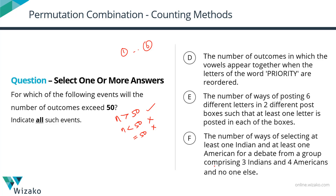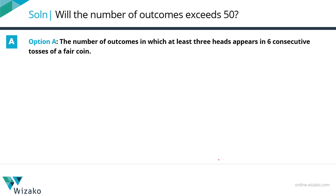Let's start with option A: the number of outcomes in which at least 3 heads appear when a coin is tossed 6 consecutive times. You toss a coin once, you have 2 outcomes. Toss it a second time, another 2 outcomes, so 2×2 when tossed twice. When you toss it 6 times, the total number of outcomes is 2⁶. But the question asks: of these 2⁶ outcomes, in how many will you get at least 3 heads?